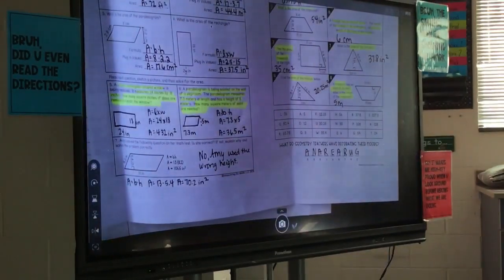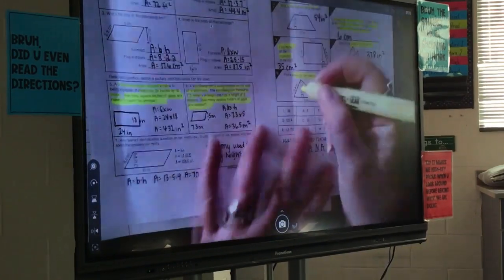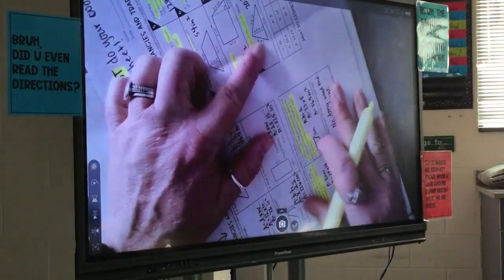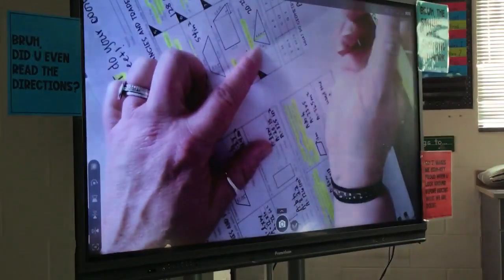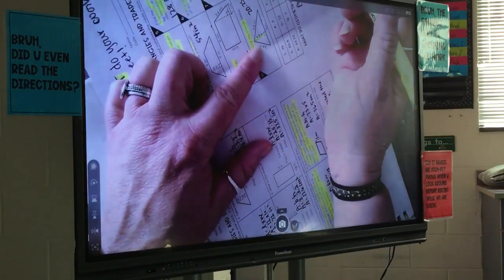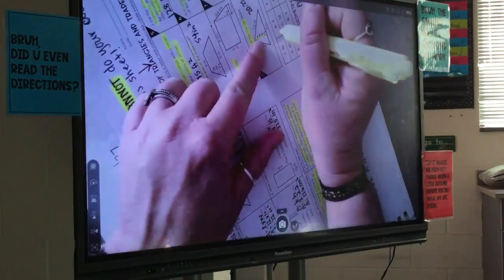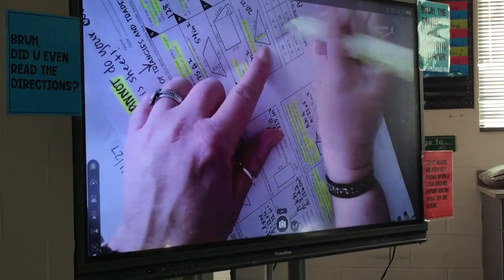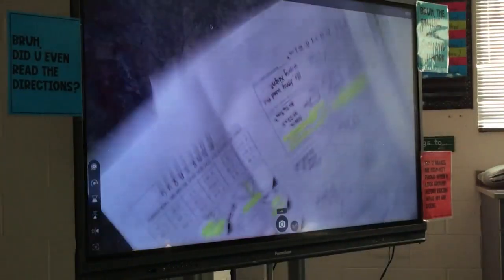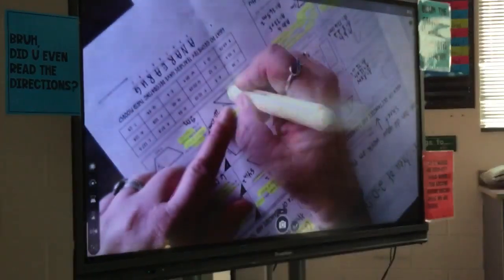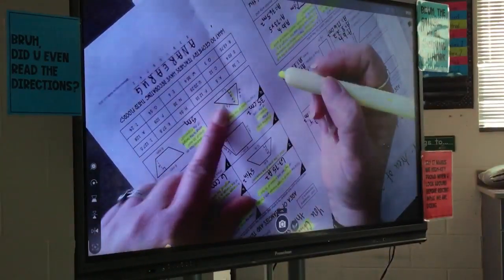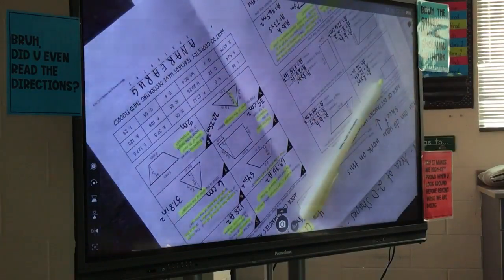Kira, the way that you know the base and the height is it makes a 90-degree angle. If I turned my paper a different way, if I said this is the base, this is my height right here. And I know it's my height because why? The dotted line. Does this line form a 90-degree angle to my base? No. So then if I turn it this way, does my height form a 90-degree angle to my base? And everybody knows what a 90-degree angle is, right?